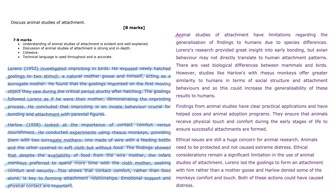Animal studies of attachment have limitations regarding the generalisation of findings to humans due to species differences. Lorenz's research provided great insight into early bonding, but avian behaviour may not directly translate to human attachment patterns — there are vast biological differences between mammals and birds. However, studies like Harlow's with rhesus monkeys offer greater similarity to humans in terms of social structure and attachment behaviours, and so this could increase the generalisability of these results to humans.